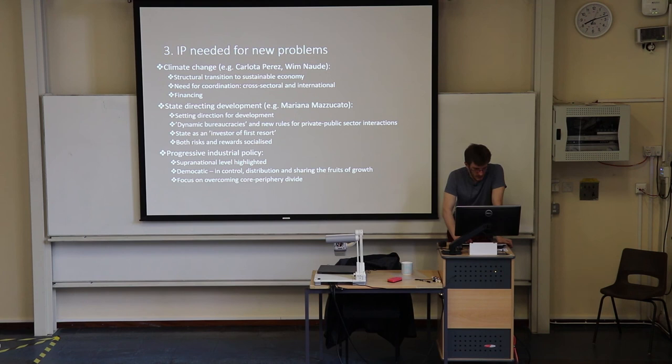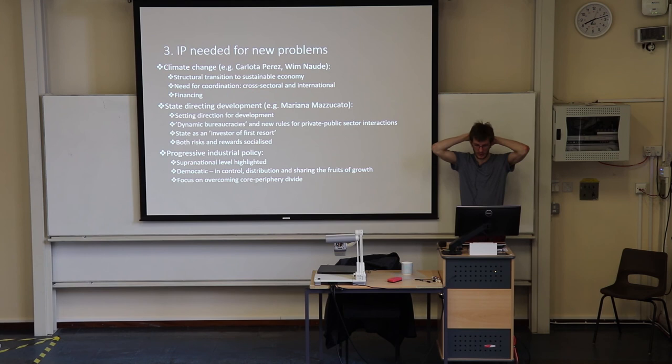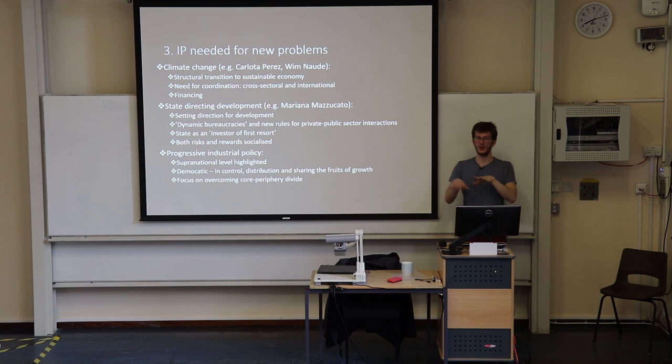There is also a call for progressive industrial policy, which often focuses on the supranational level and highlights democratic control. It also addresses the core-periphery divide in Europe — how to make it more equitable so that countries like Greece and Germany don't have such unequal terms of trade. Right now, the corporate sector has socialized risks — think bailouts — but not rewards; those stay with the corporations.